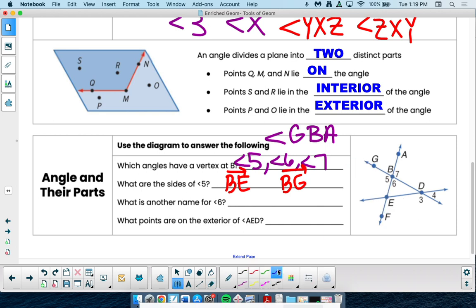What's another name for angle six? Let me trace it out. Here's my angle six. EBD. Yeah, if you trace it out, E, B's your vertex, D. That's one way. There's a few other ways, but that one works.